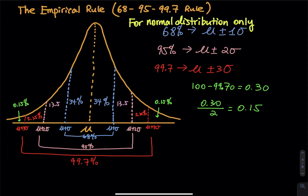In this video, I would like to discuss the empirical rule. The empirical rule has another name which is called the 68-95-99.7 rule, and this rule works for normal distribution only and is a method to divide the normal curve into pieces.